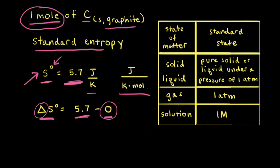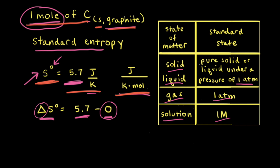The superscript naught refers to the standard state of the substance. By convention, the standard state of a solid or liquid is the pure solid or pure liquid under a pressure of one atmosphere. For gases, standard state is the pure gas at one atmosphere, and for solutions it is a concentration of one molar. In our case, the standard molar entropy of graphite refers to the entropy value for one mole of a pure solid under a pressure of one atmosphere.